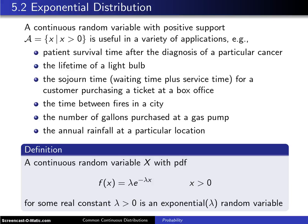The first continuous distribution in this chapter was the uniform distribution. This is the second continuous distribution, which is known as the exponential distribution.